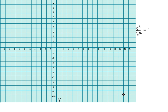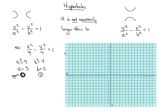Let's graph this. Center is at (0, 0). In the x-direction we go three each way and put a point; in the y-direction we go two each way and put a point. It looks like we're graphing an ellipse so far, right? But these points are not the curve itself — they are guide points for what I call the guide box. You draw a box through those four points; those are not the corners of the box, they are the midpoints of the sides. This is very different from ellipses — stay focused on the differences so you won't get them confused.